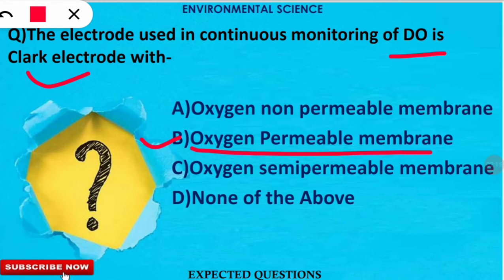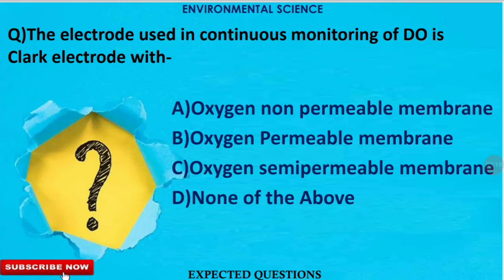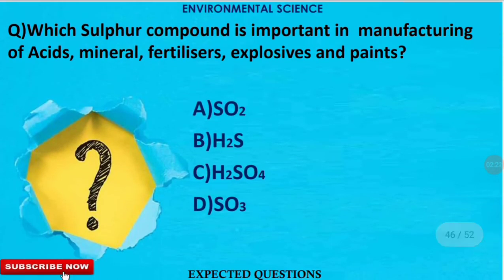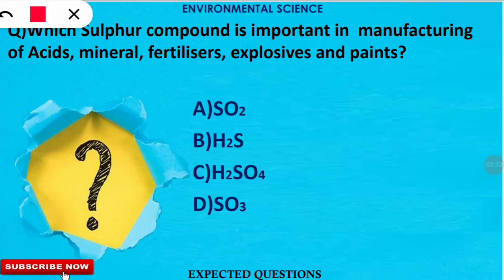The next question is: which sulfur compound is important in the manufacturing of acids, mineral fertilizers, explosives, and paints? The correct answer is option C — H2SO4, which is sulfuric acid, and it plays an important role in the production of acids, mineral fertilizers, and explosives.